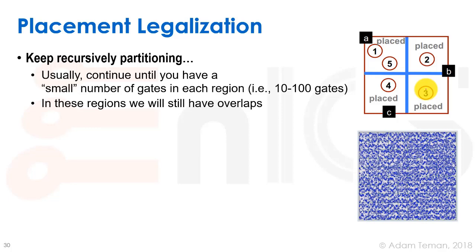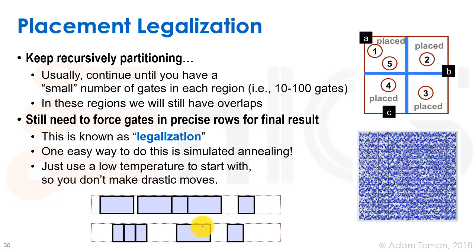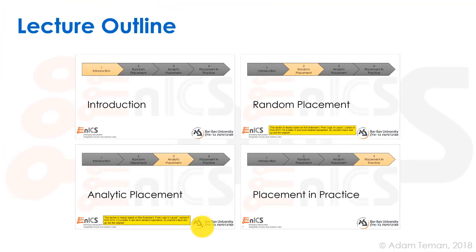The resulting placements are not yet legal — there are overlaps and gates not sitting in exact rows. So we need a legalization step to move gates, which have actual sizes from LEF files, into proper rows. We can do this with simulated annealing at a very low temperature so gates don't jump too far but reach a legal position. That's how analytic placement and modern placers work.